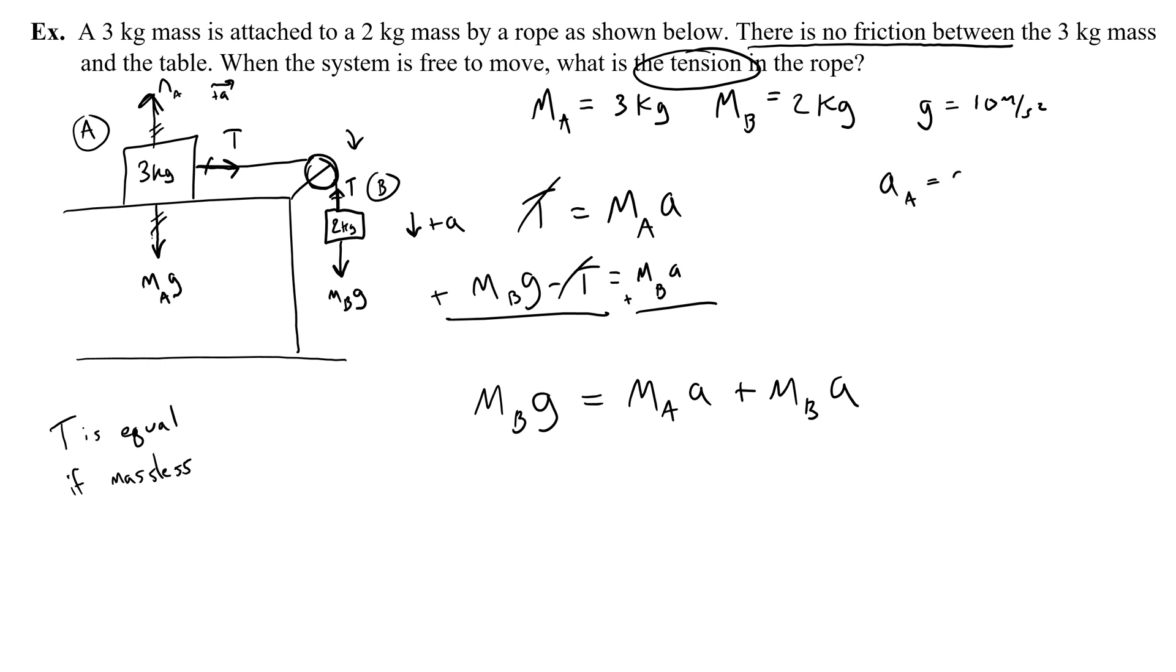And remember, the acceleration of both is the same, so I don't need to write A_A, A_B. It's all one shared acceleration, so I can just write it as A. And in this problem, to get the acceleration by itself, what I do is I factor the masses out. And now I can write an equation for the acceleration. I divide both sides by M_A plus M_B. That gets rid of that term on the right side.